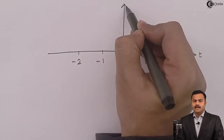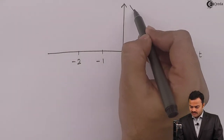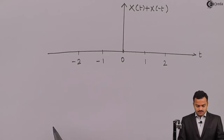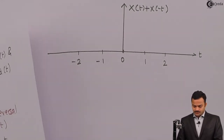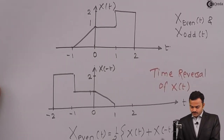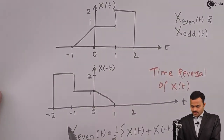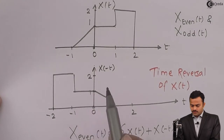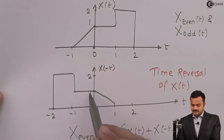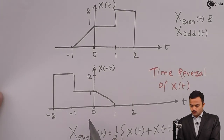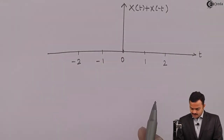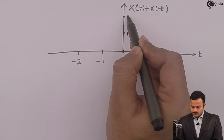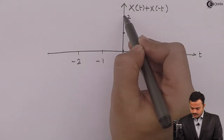The addition of x of t and x of minus t will give a new signal. Let's add the signals now, starting with the zero instance. For both signals, at t equal to zero, the values are one and one, so I can add these to give you two. So for t equal to zero, I will get the value equal to two.